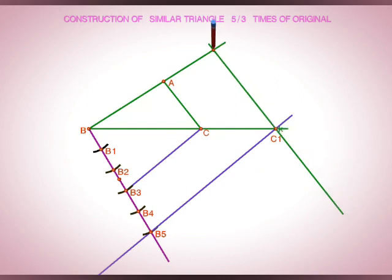Now A1BC1 is 5 by 3 times ABC. Why? Because BB5 is to BB3 equals 5 is to 3 and B3C is parallel to B5C1.